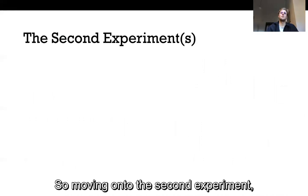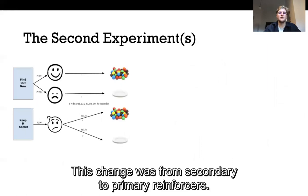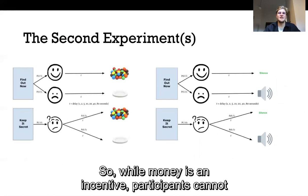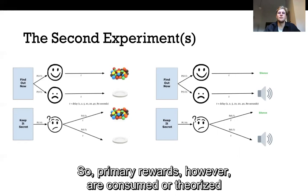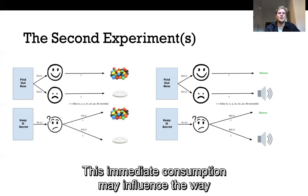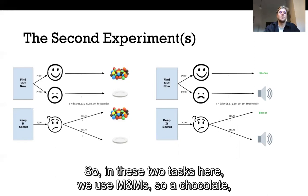So moving on to the second experiment we only made one simple change. This change was from secondary to primary reinforcers. So while money is an incentive participants cannot consume it immediately upon arrival. They might be able to buy something with it after but it isn't inherently rewarding. So primary rewards however are consumed or theorized to be consumed as soon as they arrive. This immediate consumption may influence the way people anticipate the arrival of the actual outcome.